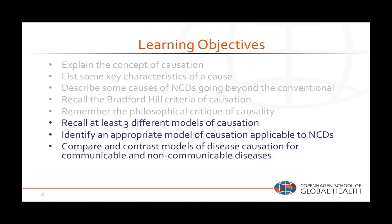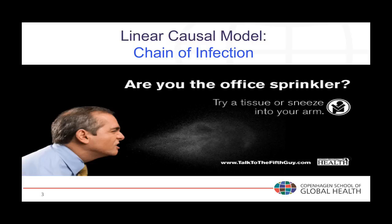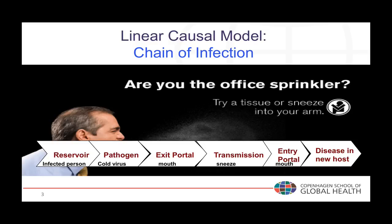Let's get started and introduce the first simple model of disease. The linear causal model, exemplified by the chain of infection illustrated by a sneezing man, is based on the assumption that one step follows the other in a linear fashion: from a reservoir — the infected person where the virus resides — through the exit portal, transmission either direct or indirect, an entry portal, and then causing disease in a new host.